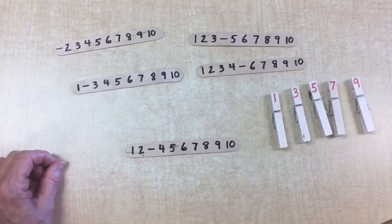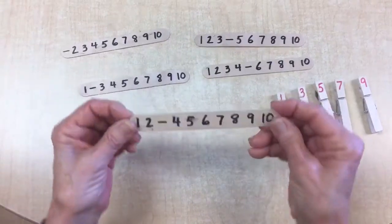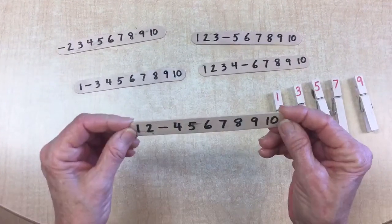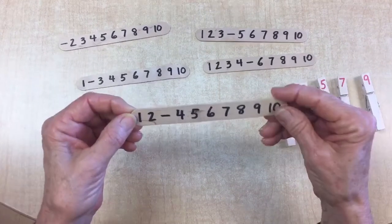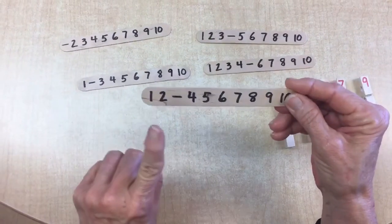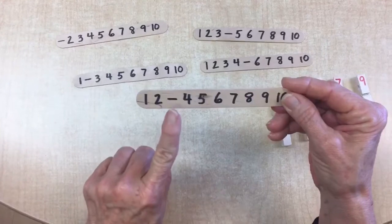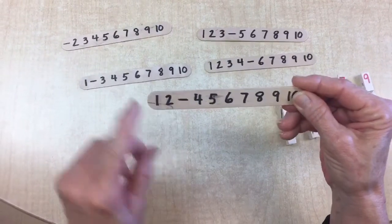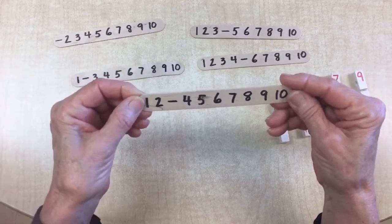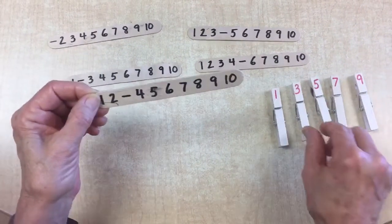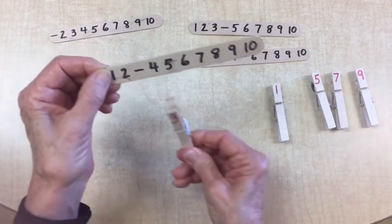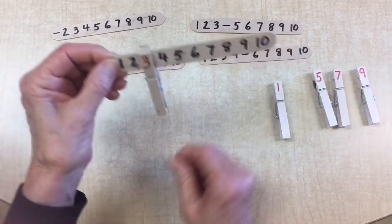I'm going to take a clothespin and you're going to count. You have to find the missing number. Let's count. 1, 2, 3... 3 is missing. I'm going to find the 3 on my clothespins. There it is. And I'm going to put the 3 right here. Now I can count.